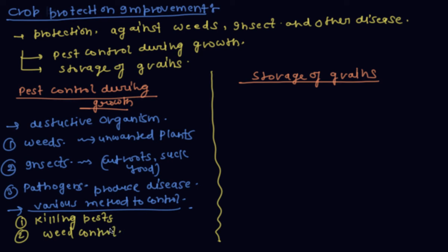For weed control, various methods include crop rotation, proper sowing type, and intercropping.